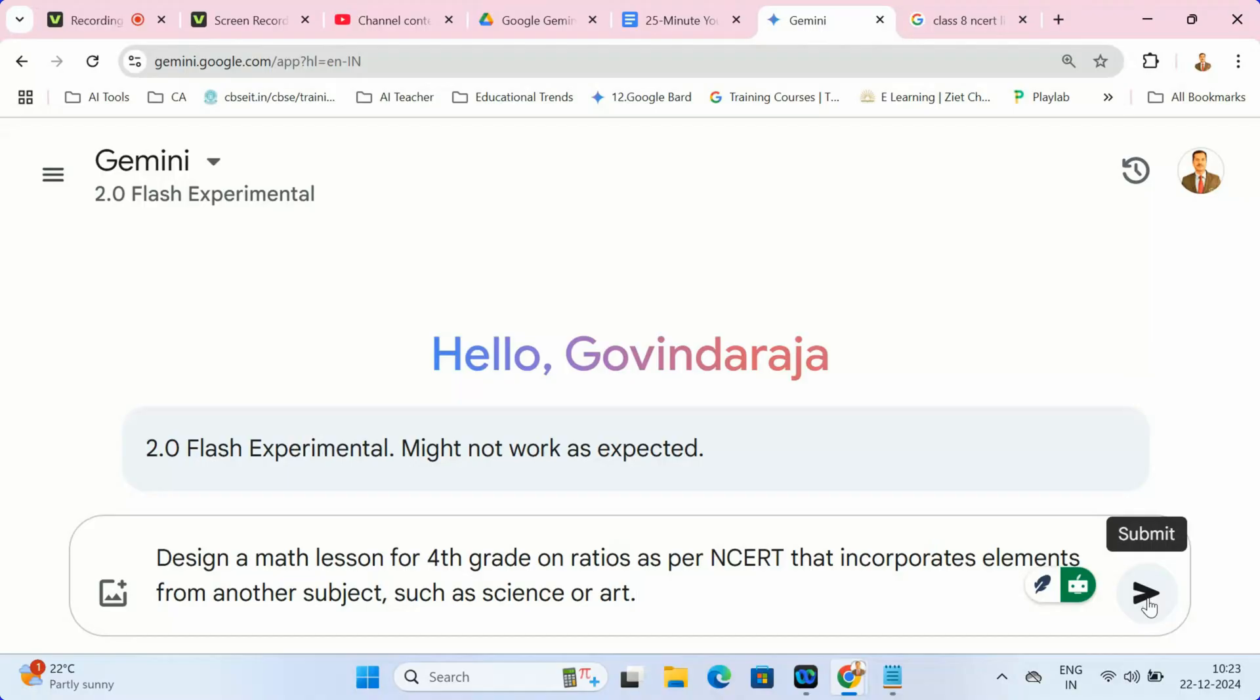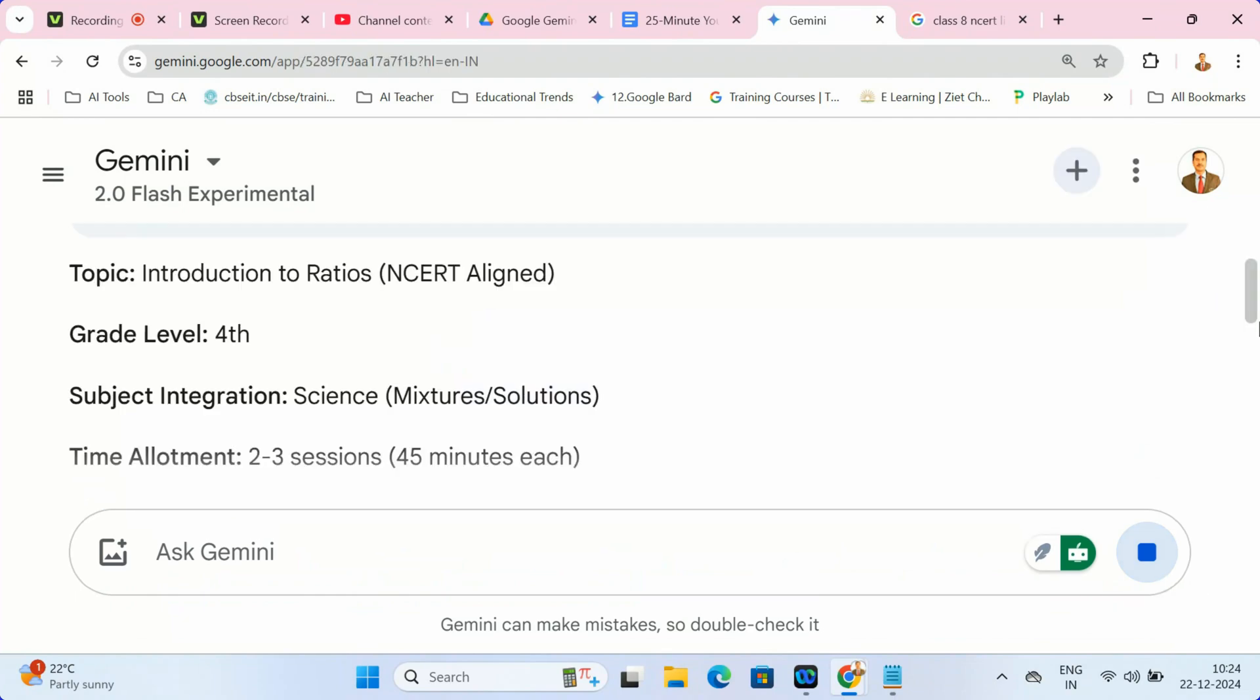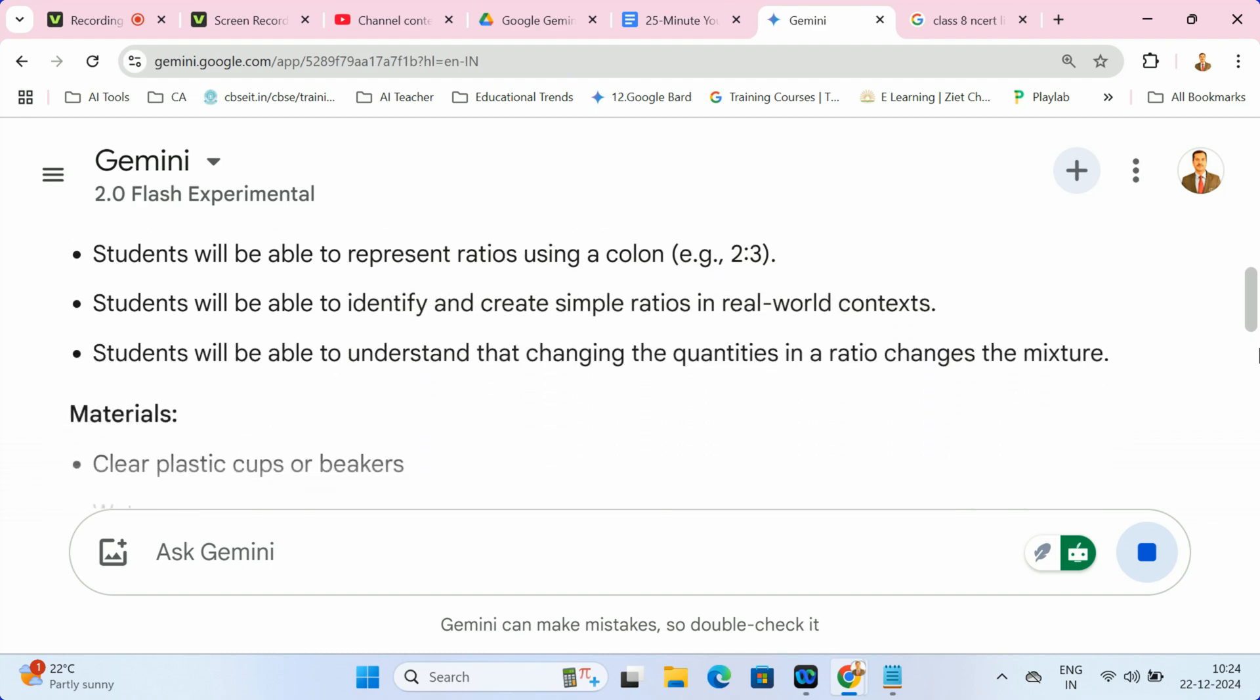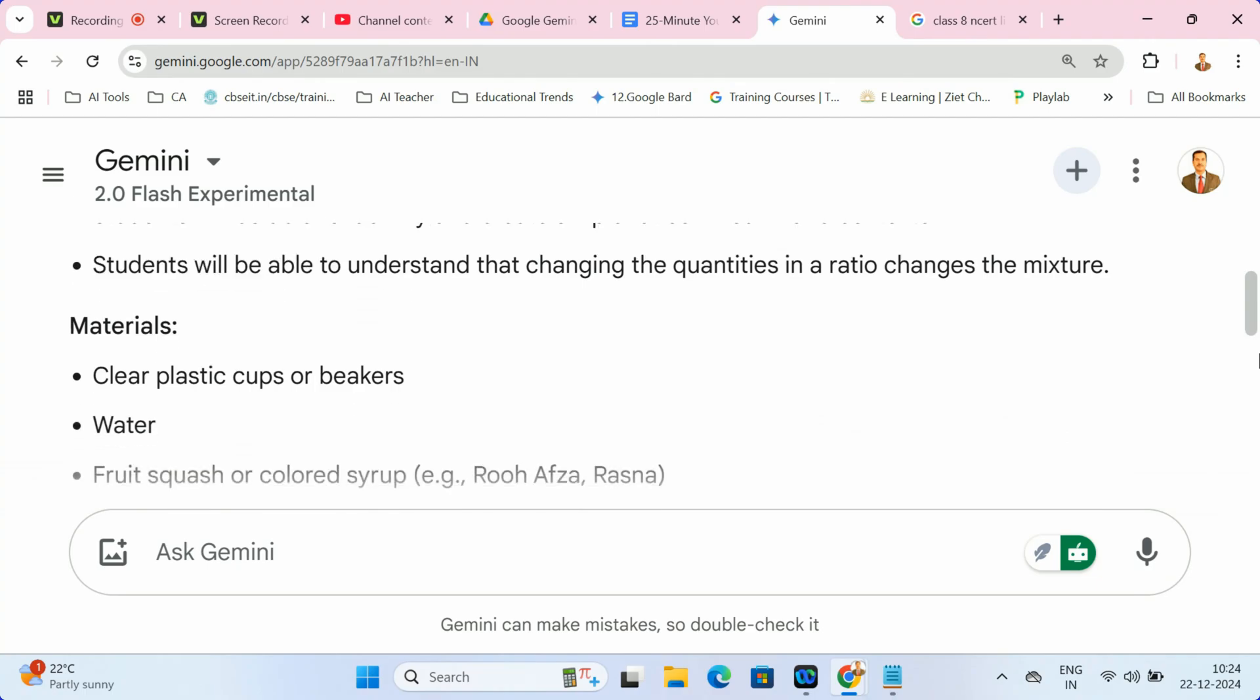Link math to other subjects for deeper learning with this prompt. For ratios, Gemini might suggest exploring color mixing in art or analyzing gear ratios in science. Your students will love seeing how math connects to their world.